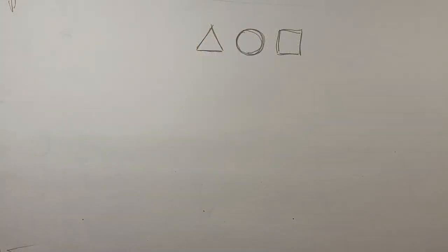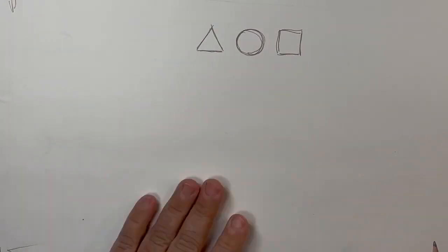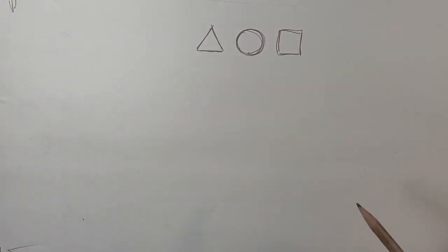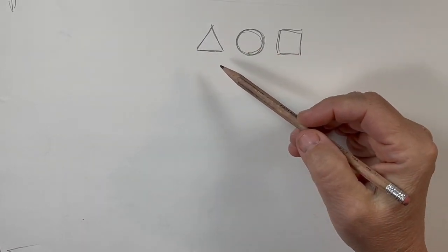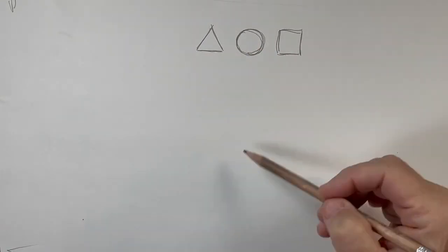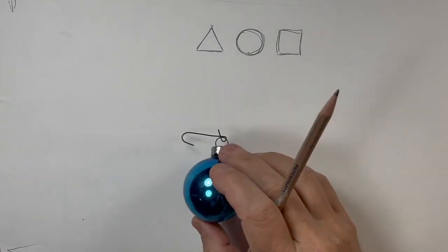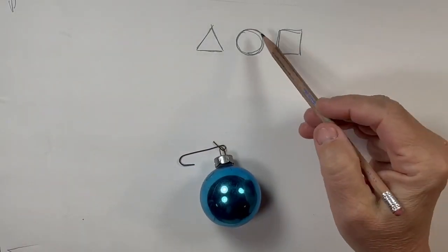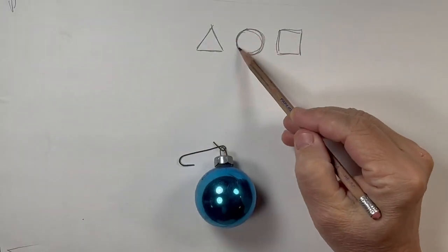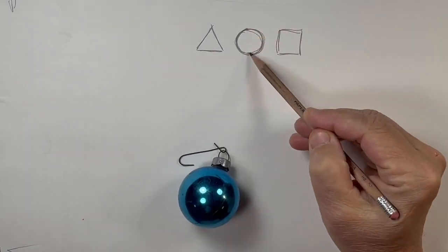Hello folks and welcome back. Today I'm going to talk about recognizing shapes in the items that you're drawing, such as this Christmas ball, which is nothing but a circle. The three most widely recognized shapes when drawing are the circle, the triangle, and the square.